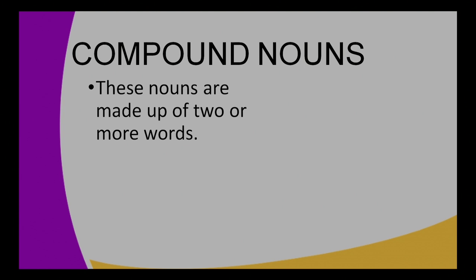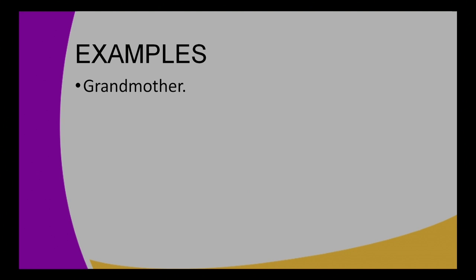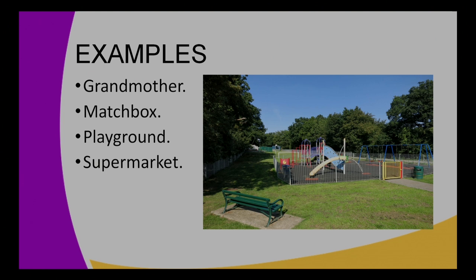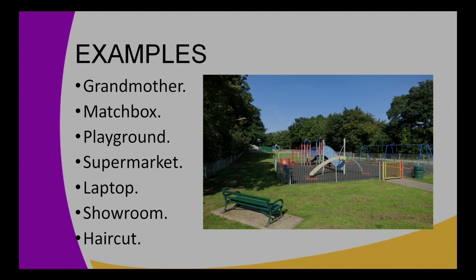Next we have compound nouns. As the name suggests, these nouns are made up of two or more words. Examples of compound nouns: grandmother — from the two words grand and mother; matchbox — match and box; playground — play and ground; supermarket; laptop; showroom; and haircut — formed by the two words hair and cut.